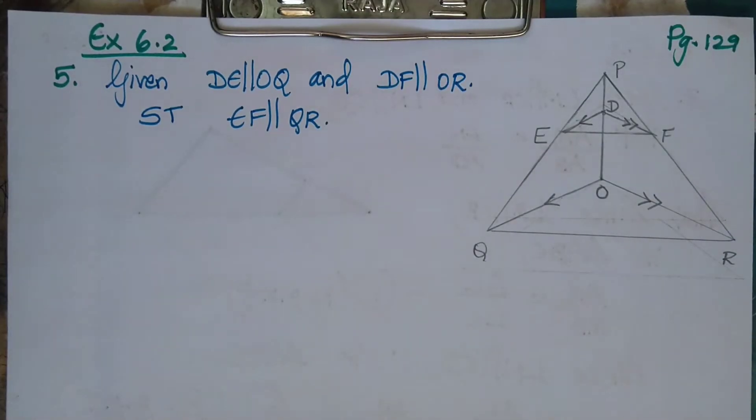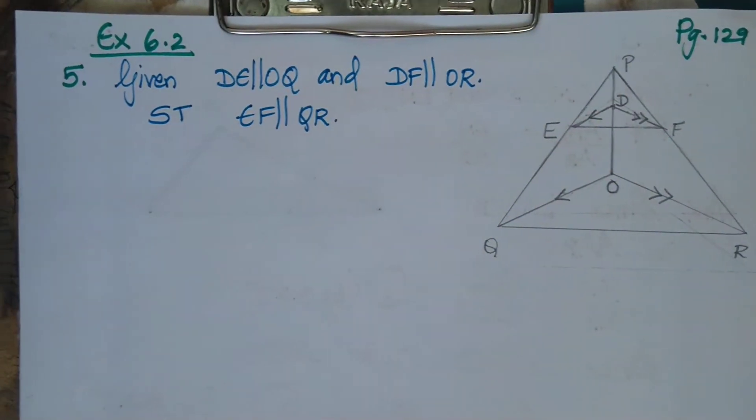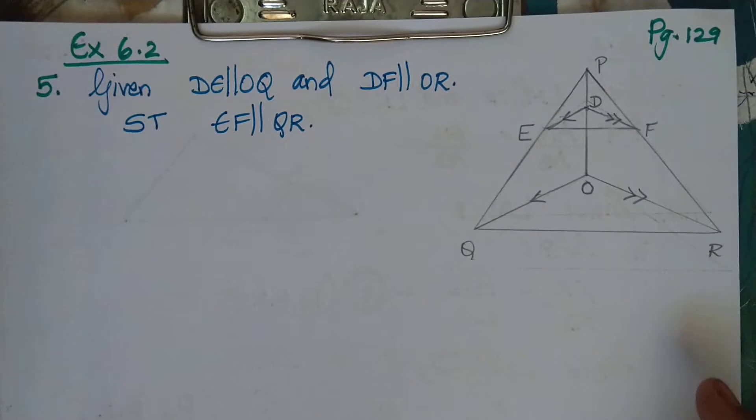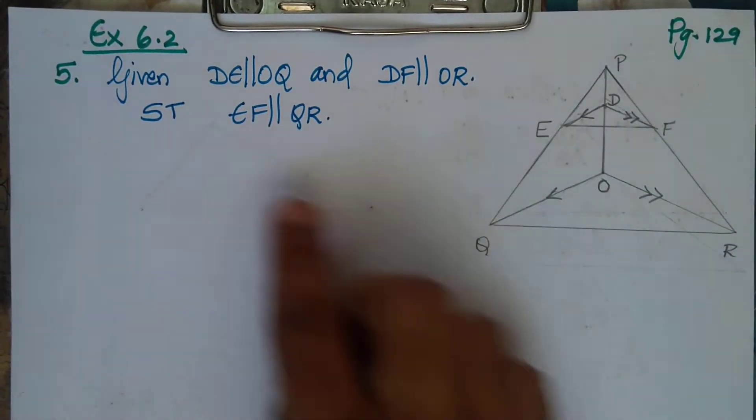Page number 129, exercise 6.2, question number 5. Given, there is a figure given — triangle PQR.